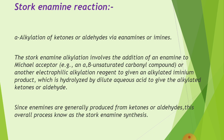The Stork enamine alkylation involves the addition of an enamine to a Michael acceptor - for example, an alpha-beta unsaturated carbonyl compound - or another electrophilic alkylating reagent, to give an alkylated iminium product, which is then hydrolyzed by dilute aqueous acid to give the alkylated ketone or aldehyde.